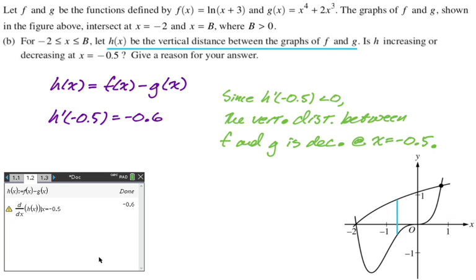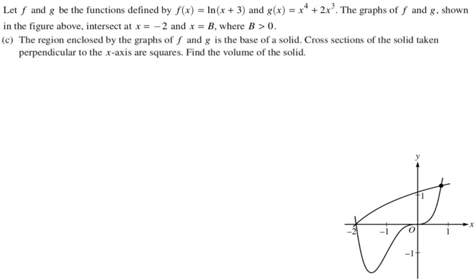So the region enclosed by the graphs of f and g is the base of a solid. Cross sections of the solid taken perpendicular to the x-axis are squares. Find the volume of the solid. Alright, so this is volume with known cross sections, right? And also keep in mind, we already know what B is from part A, where we had to solve for it. So we're allowed to just bring that forward with us.